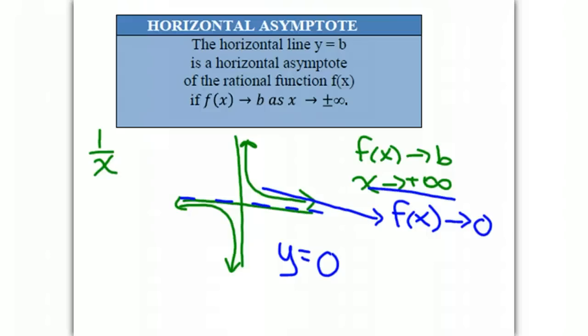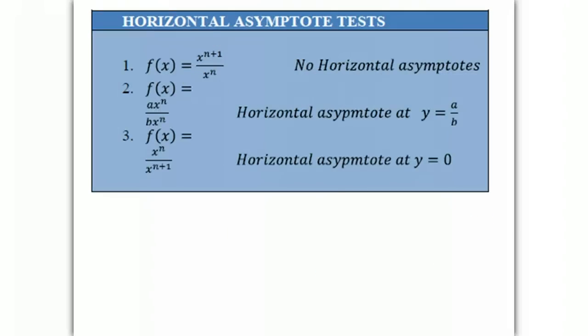So if we look, we see that if f(x) equals x to the power of n plus 1 over x to the power of n, there's no horizontal asymptotes. So let's look at an example of that.